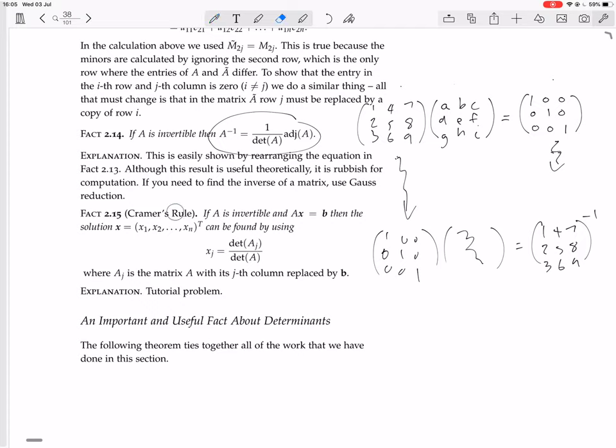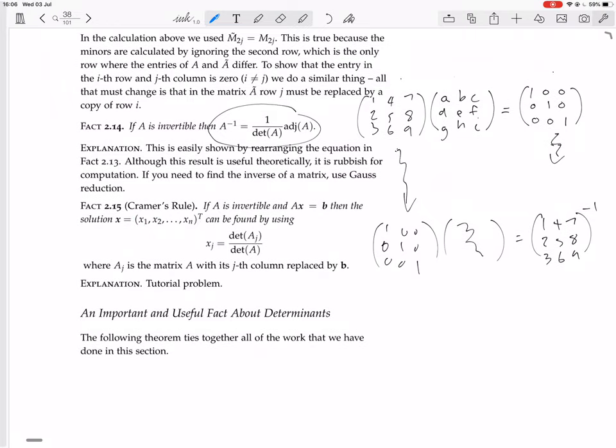Now we have Kramer's rule. If A is invertible and A X equals B, then the solution X, so this X1, X2, Xn transpose, that's just because they didn't want to write X equals X1, X2, Xn, because they felt that would mess up the formatting. If A X equals B, then the solution X can be found by using XJ as determinant of AJ over determinant of A, where AJ is the matrix A with its Jth column replaced by B.